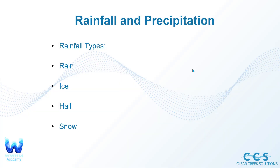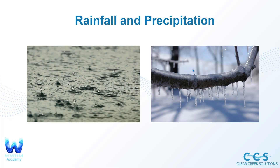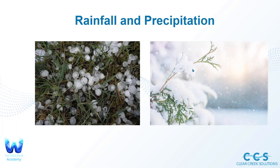Here are some of the different rainfall and precipitation types that are often identified in hydrology and water resources engineering. We have rain, ice, hail, and snow, and they're going to act slightly differently. These are the weather forms you've likely seen, but it's important to point out these examples. Rain, ice, hail, and snow all occur under different weather conditions.